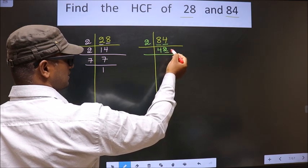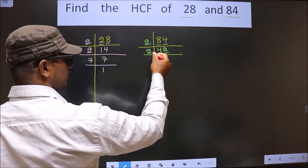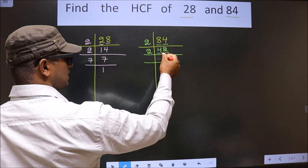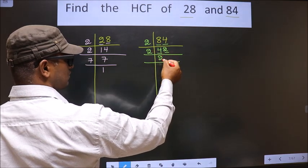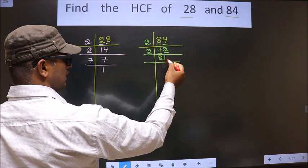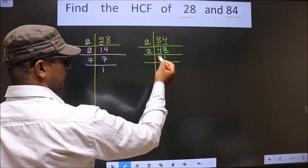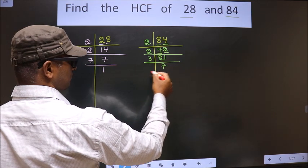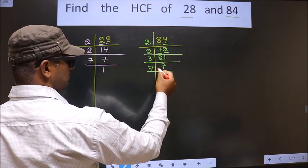Now for this number, last digit is 2 which is even, so we take 2 here. First number is 4. When do we get 4 in 2 table? 2 times 2 is 4. Next number is 2. When do we get 2 in 2 table? 2 times 1 is 2. Now here we have 21. 21 is nothing but 3 times 7. 7 is a prime number, so we take 7 times 1 is 7.